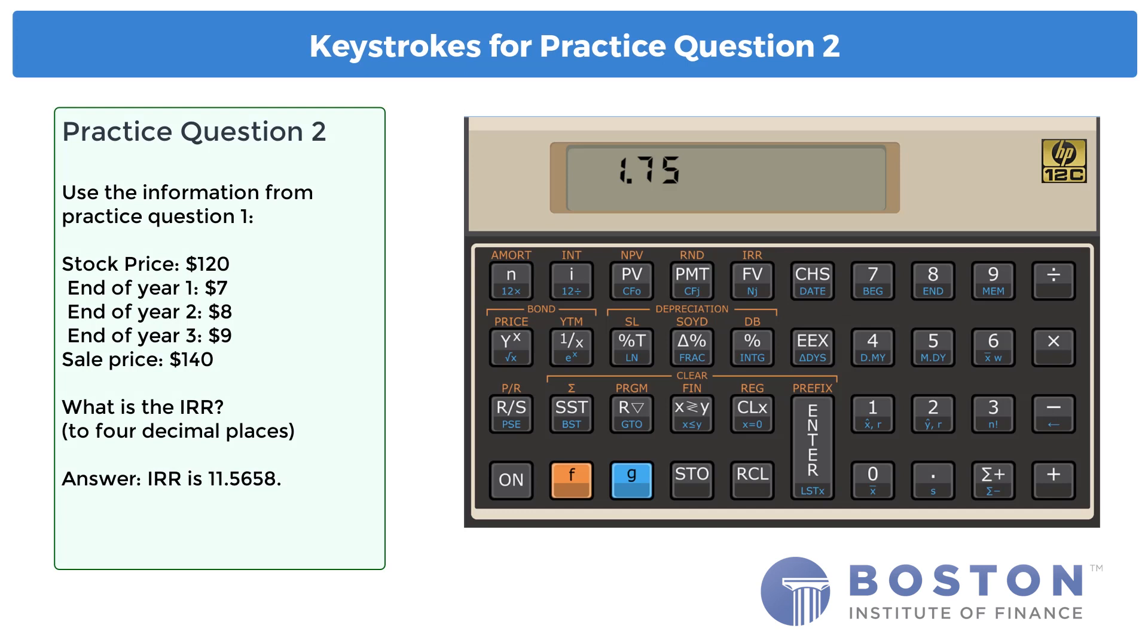Practice question 2. Clear all registers. As before, enter 120, change sign, prefix G, going into CF0. 7, prefix G, CFJ. 8, prefix G, CFJ. $9 is combined again with $140, so enter 149, prefix G, into CFJ. The final step is pressing keys prefix F and IRR. Adjust the number of digits displayed by pressing prefix F and 4.